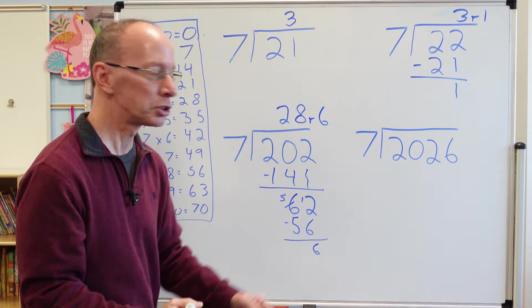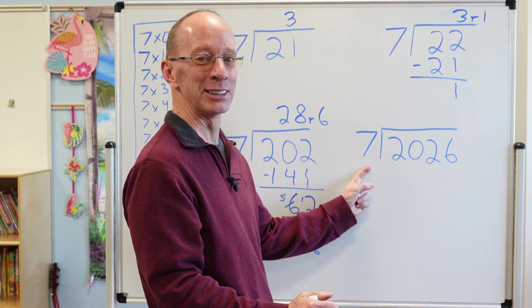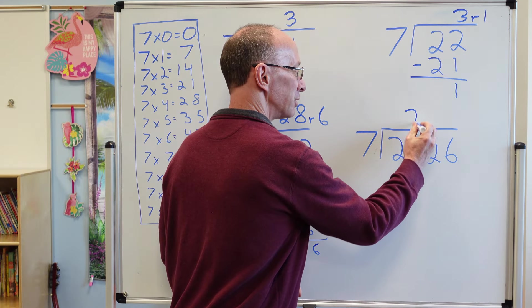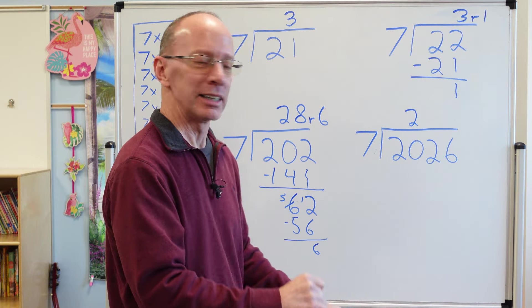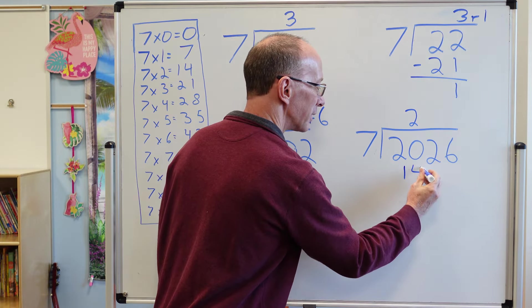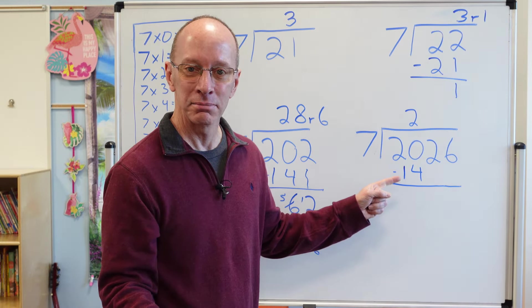Ready to do the last one? Yeah, let's do it. Again, how many times does seven go into 20? Two times. Here's our two. I'll get back to the mathematics. Two times seven. 14. Subtract. 20 minus 14. Six.